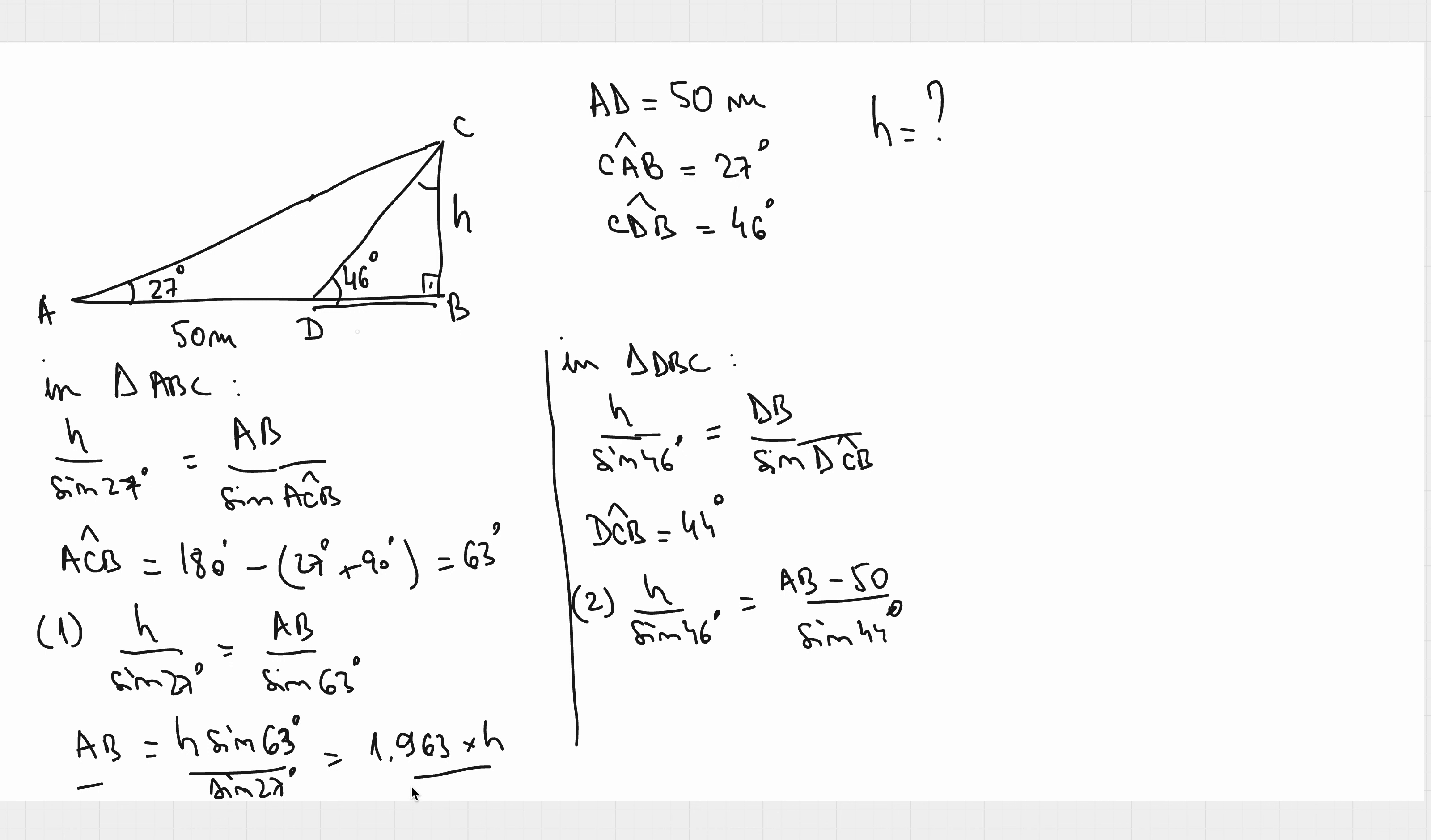And if we replace the AB that we found here in the second equation, we will have that and compute sine of 46, sine of 44 and rearrange the things. We'll have 0.695 times H equals 1.963H minus 50 times sine of 46 degrees,